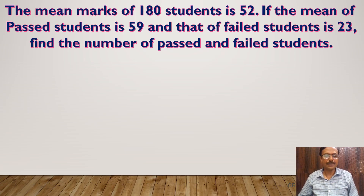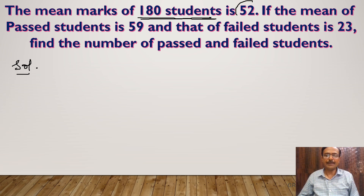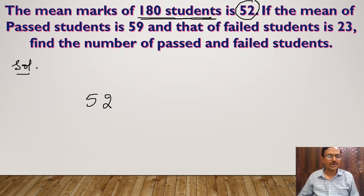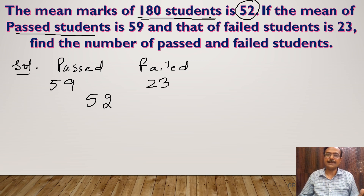Let's see the problem at hand. You can see the problem written here — this is a problem of mean. We are given that the mean marks of 180 students is 52. The mean of the passed students is 59, and the mean of the failed students is 23. We need to find the number of students who passed and the number of students who failed.